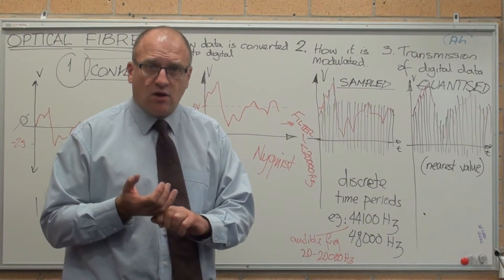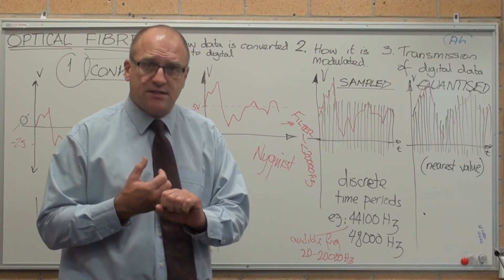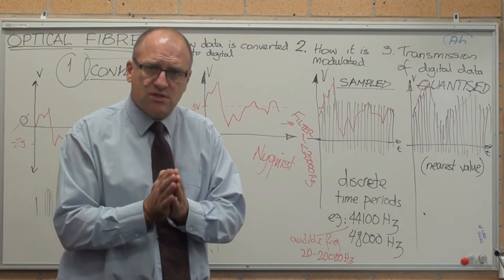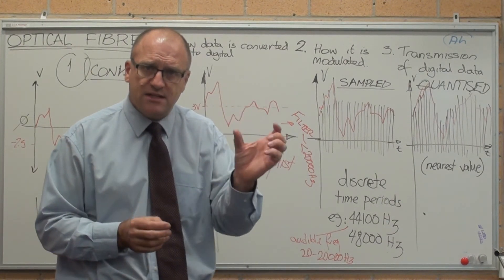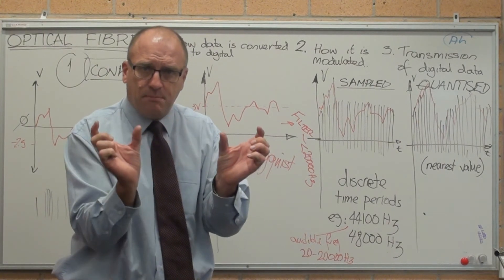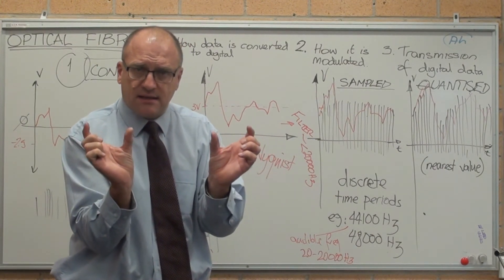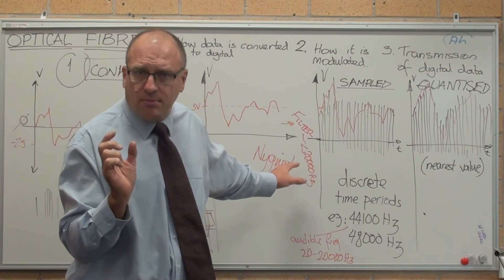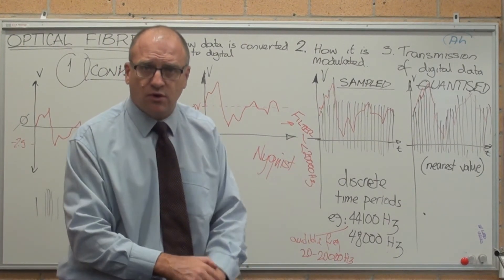The Beta tapes ran a lot faster than the VHS tapes. But they had to find a common sampling frequency that would work for both VHS at the speed the VHS tape was running at, and Beta, the Sony Beta tapes. And that common frequency that was just a little bit above 40,000 Hz was 44,100.